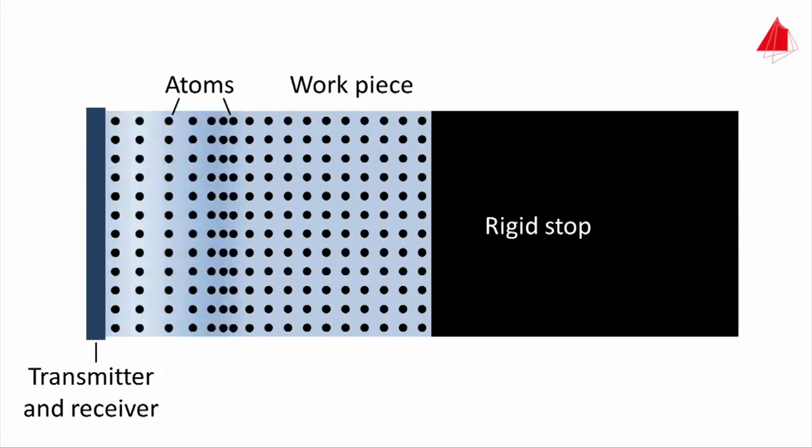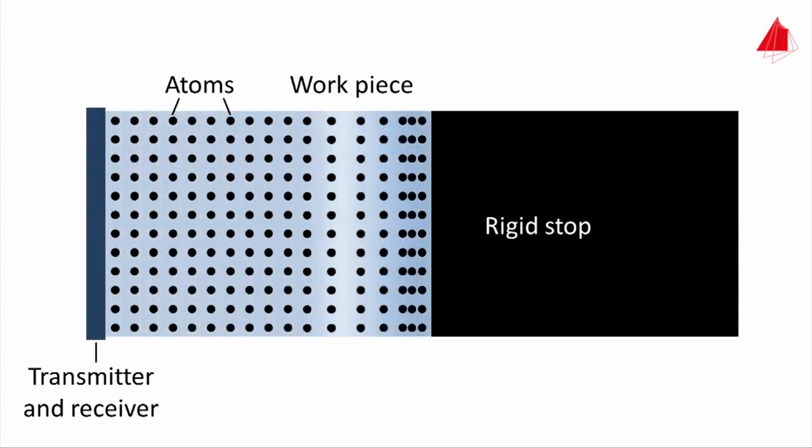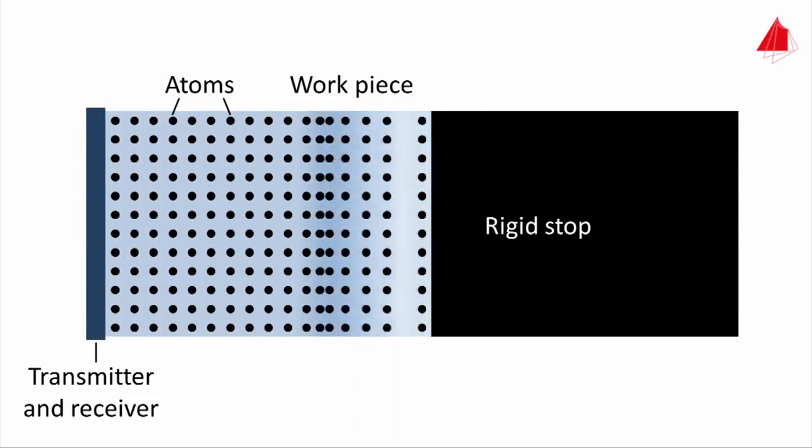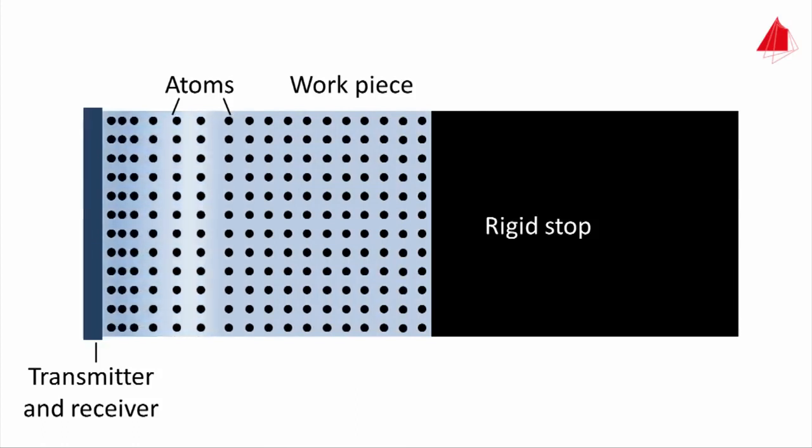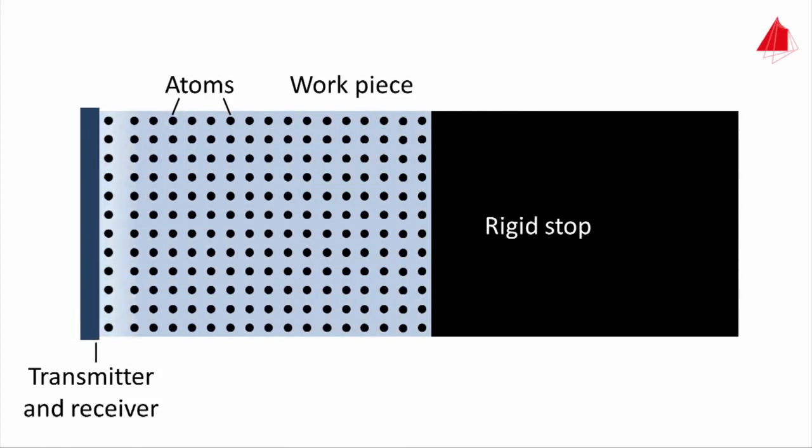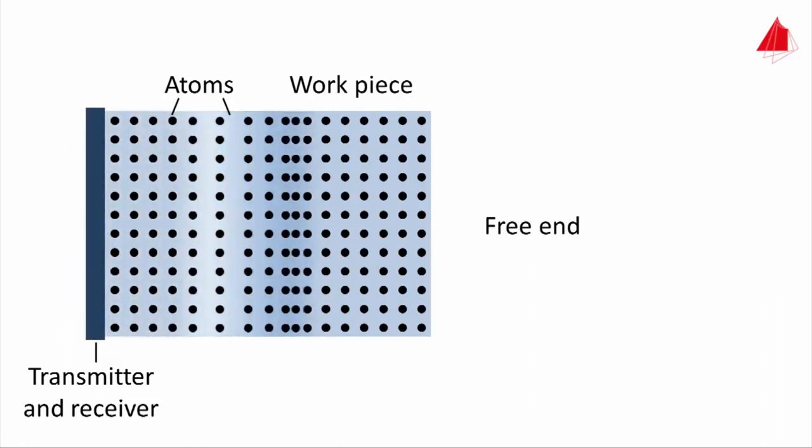Pushing and pulling briefly at the disc causes a longitudinal sound wave to propagate through the cylinder. When the sound wave reaches the rigid stop at the right side, it is reflected and runs back towards the disc, which now serves as a receiver.